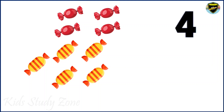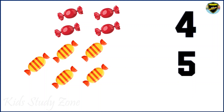Now moving on to the other color, that is yellow candies. Let's start counting: 1, 2, 3, 4, 5. So we have 5 yellow candies.